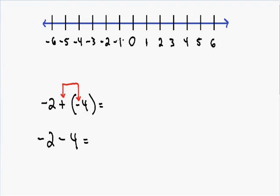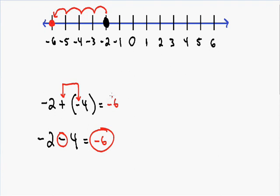We're starting at negative two — I'll circle where we start in black. We are subtracting four, so we go to the left four units. Counting one, two, three, four, we finish at negative six. So negative two minus four equals negative six, or negative two plus negative four also equals negative six.